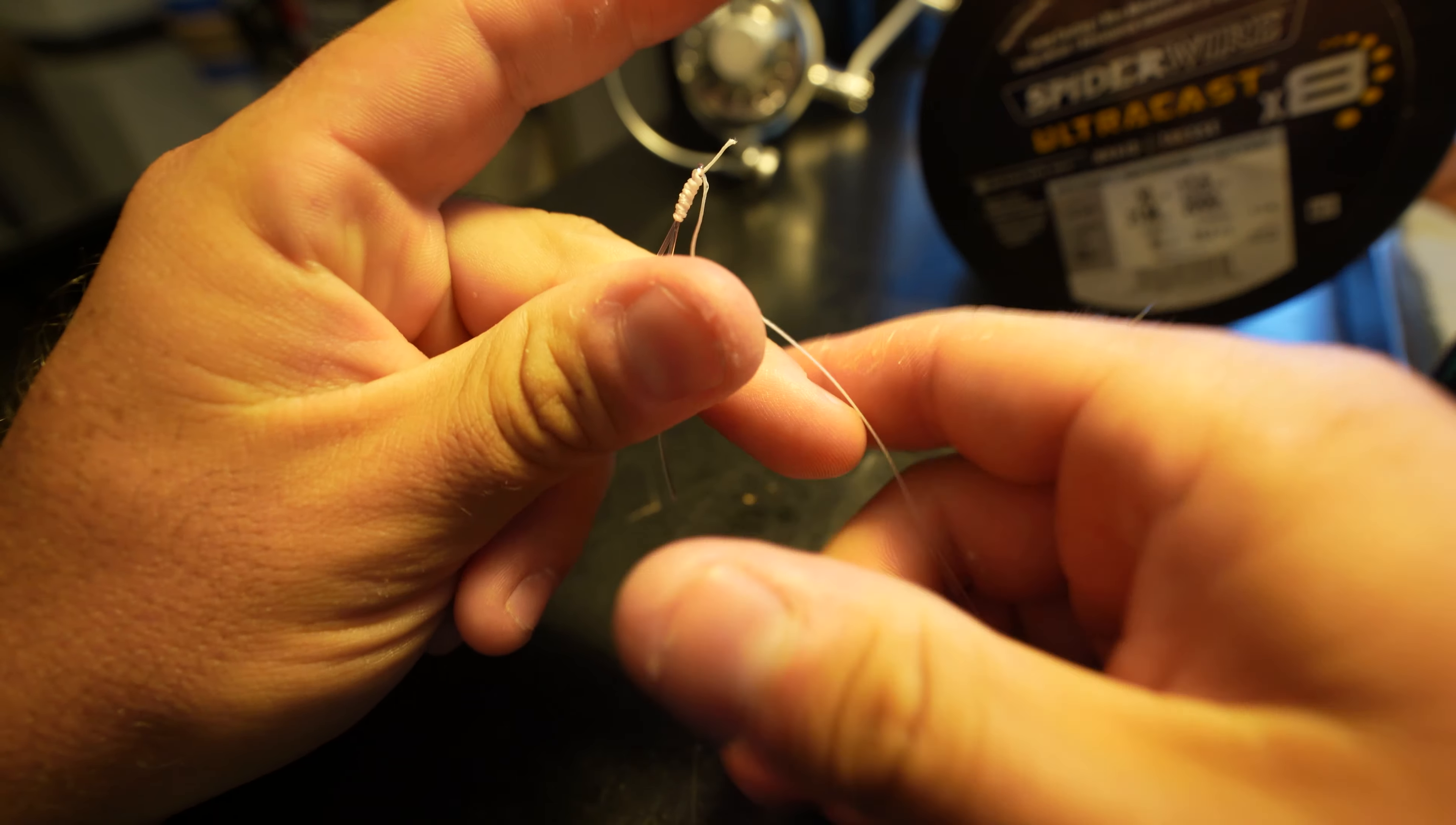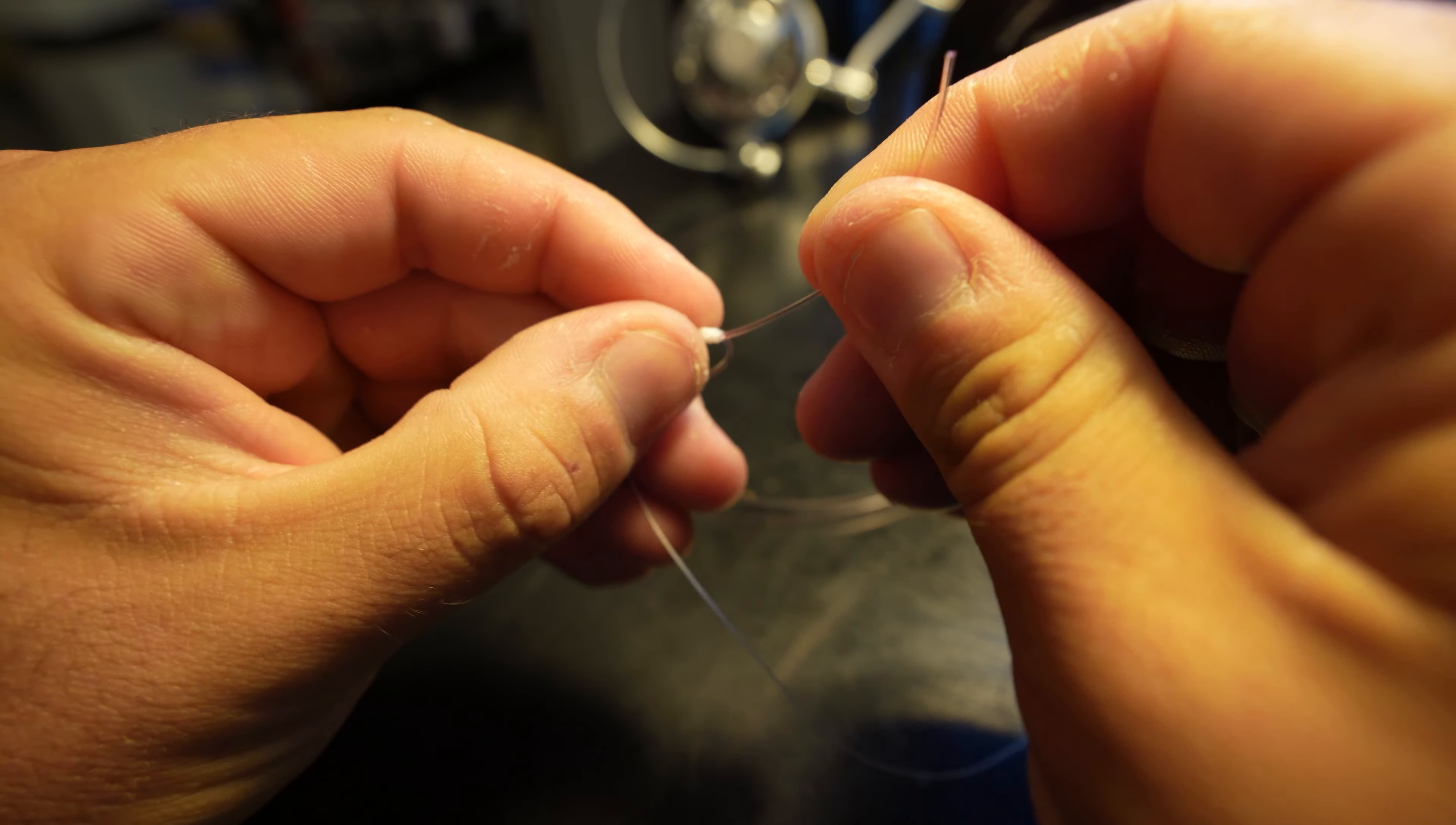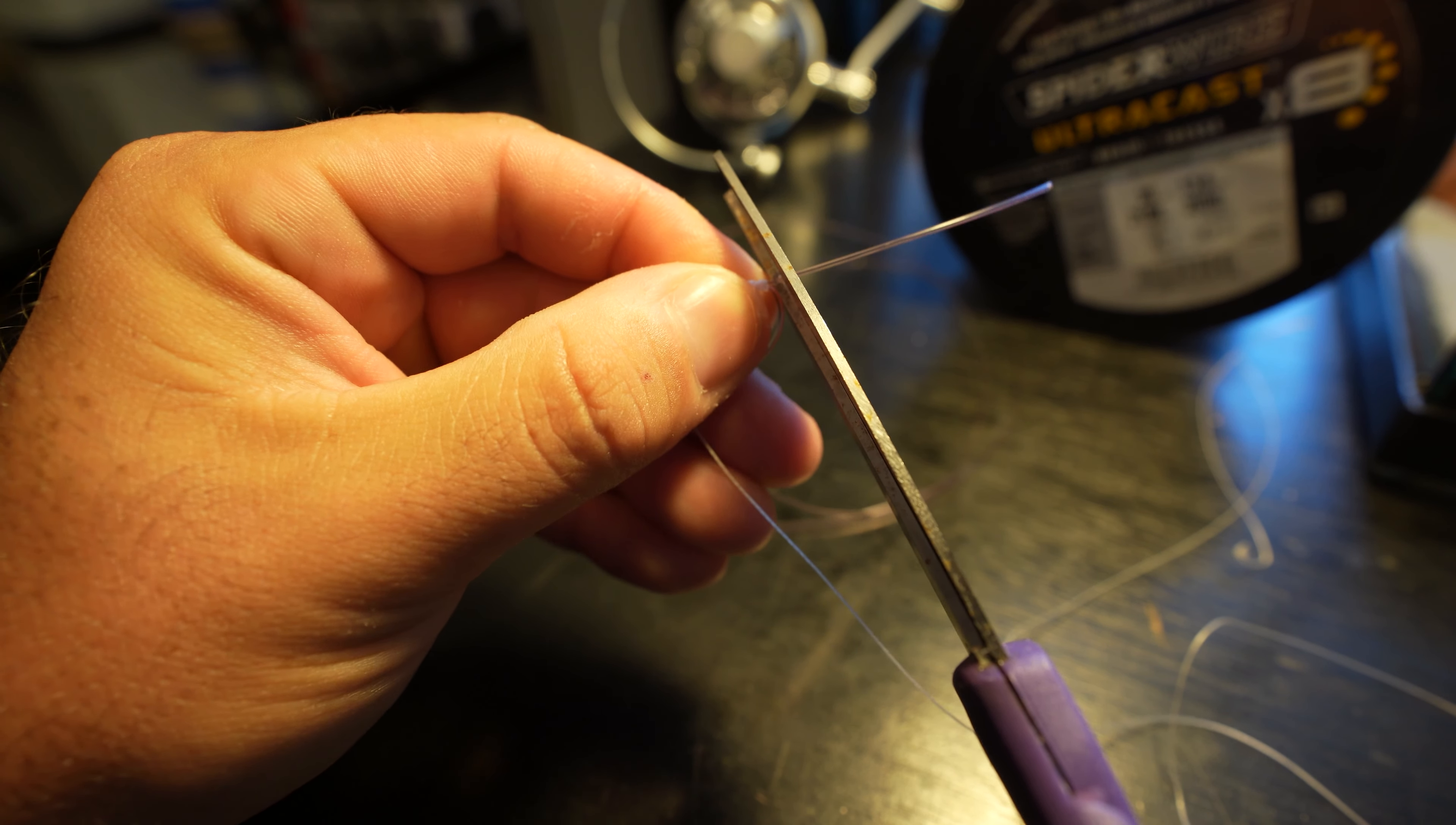When you come to your side with fluorocarbon, we're going to cut that tag end. This you can cut pretty much as flush as possible. Let's see if I can get right in there. All right, and now hopefully that was a pretty simple and easy-to-see tutorial.